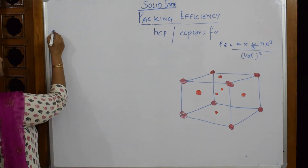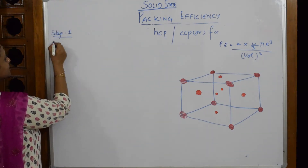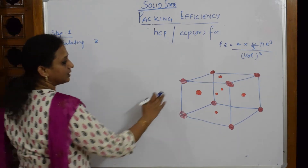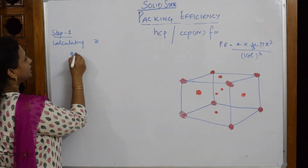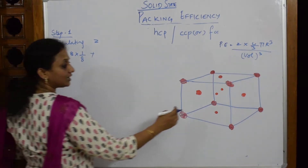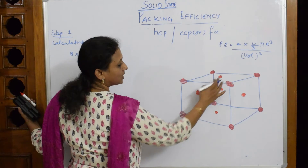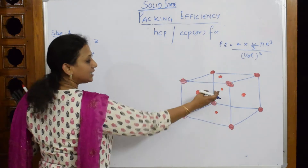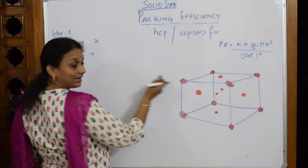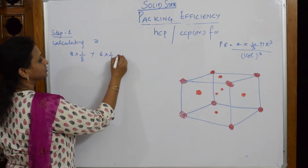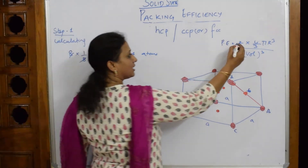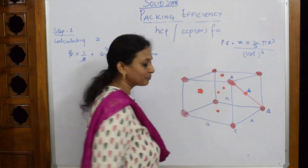Step one: calculating Z — the number of effective atoms. We have eight corners, each contributing 1/8: 8 × (1/8) = 1. Plus six faces, each contributing 1/2: 6 × (1/2) = 3. Total effective atoms Z = 1 + 3 = 4. Now I have Z = 4, and I need to calculate the volume.